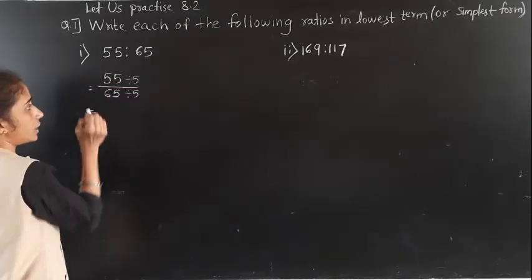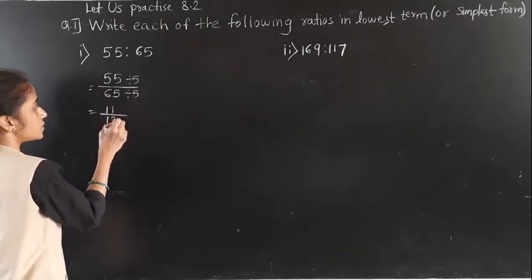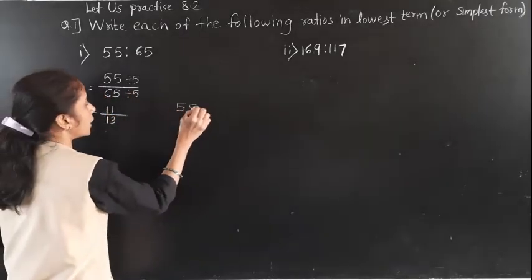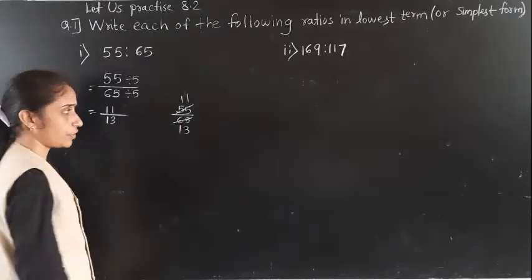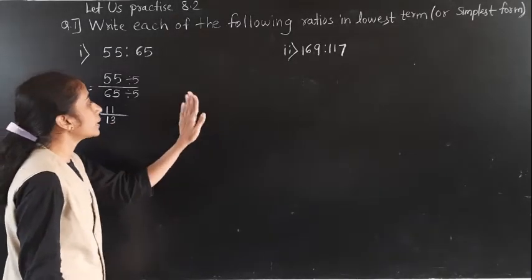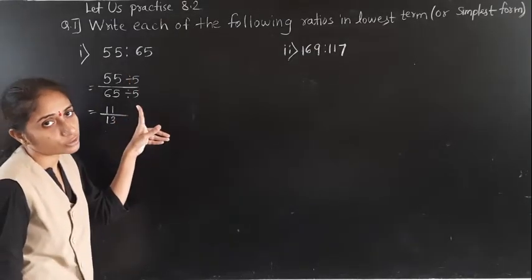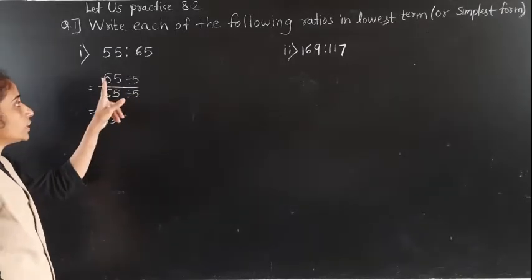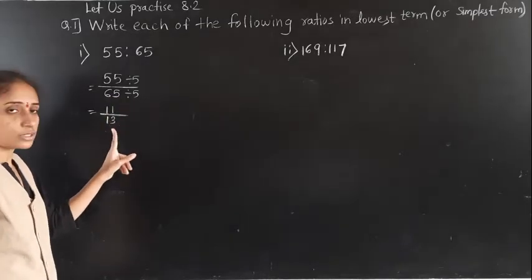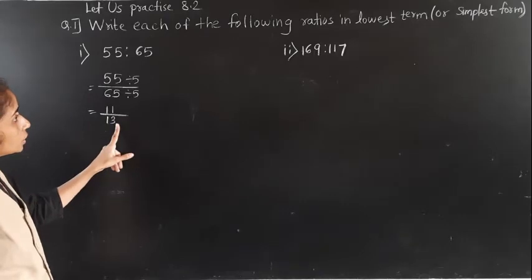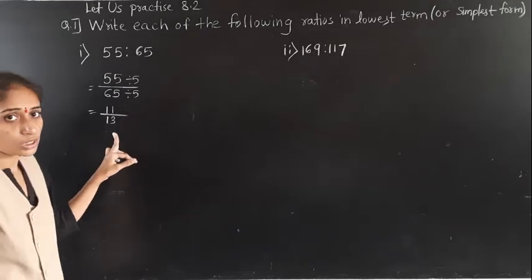55 divided by 5: 5 elevens are 55, so we get 11. 65 divided by 5: 5 thirteens are 65, so we get 13. Those who can do it directly can write it; those who don't know can show the division. Divide by 5 for numerator and denominator. So the answer is 11 upon 13, which means the ratio is 11 to 13.